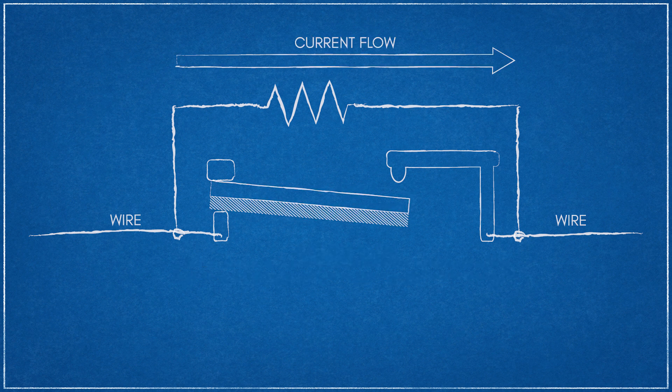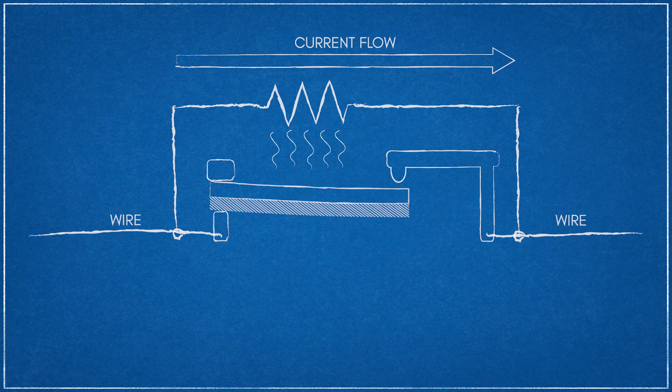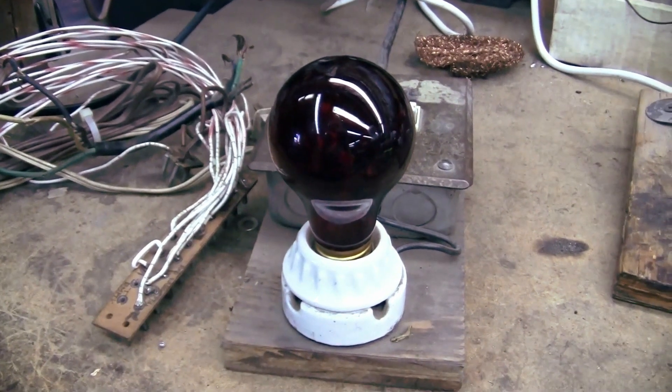This cycle of self-opening and closing a switch from the motion created by heating and cooling is called a thermal flasher. By tuning the resistance of the heating element and the temperature trigger point of the bimetallic strip, we can change the rate of flashing.